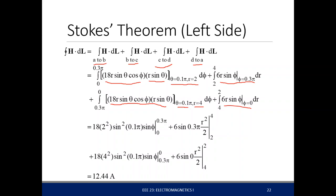Just perform the integrations, substitute values, and use your calculator. You can see that the total current enclosed by the path is 12.44 amperes.